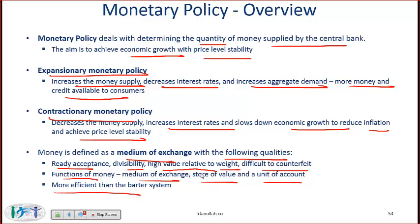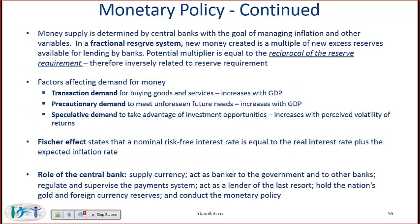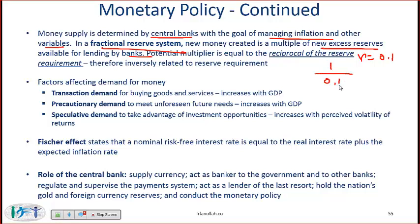Money is more efficient than a barter system. Money supply is determined by central banks with the goal of managing inflation and other variables. In a fractional reserve system, new money created is a multiple of new excess reserves available for lending by banks. The potential multiplier is equal to the reciprocal of the reserve requirement — so if the reserve requirement is 10% or 0.1, then the potential multiplier is 1/0.1, which equals 10.